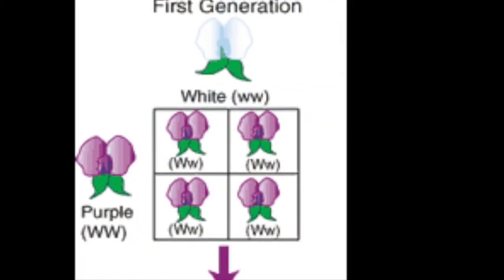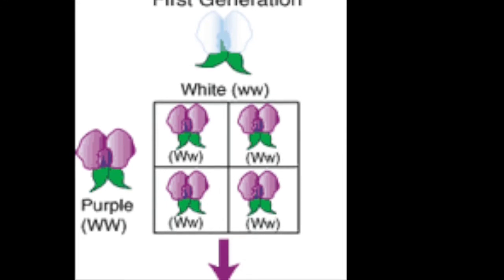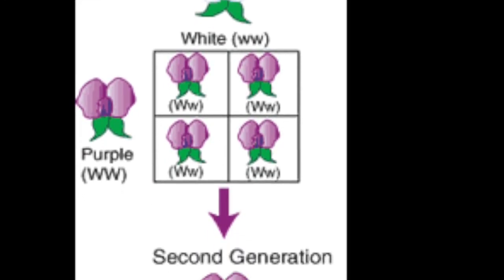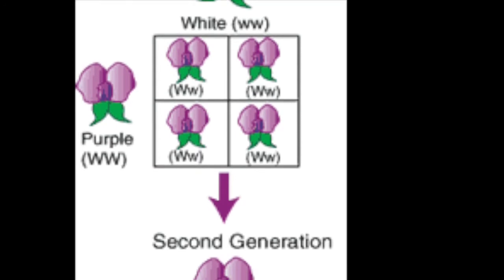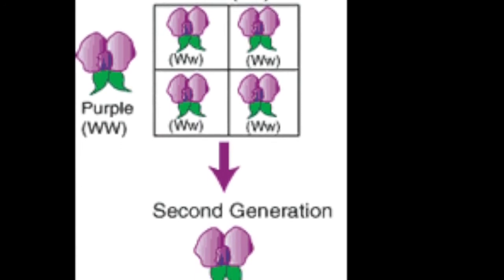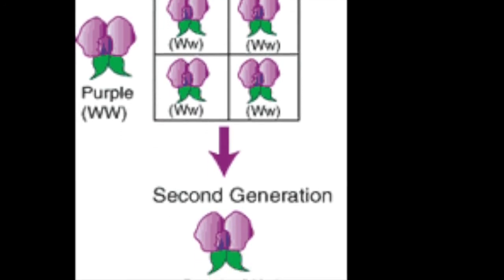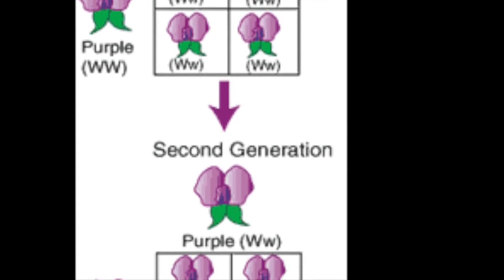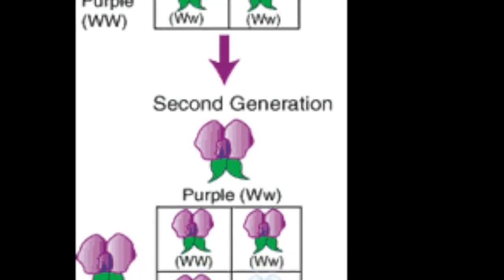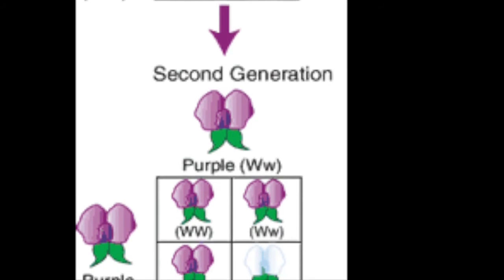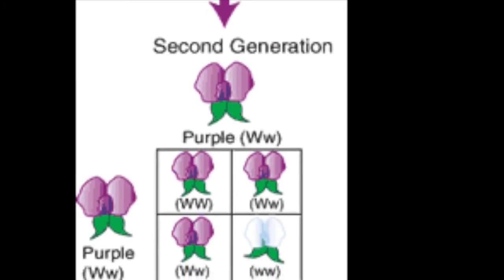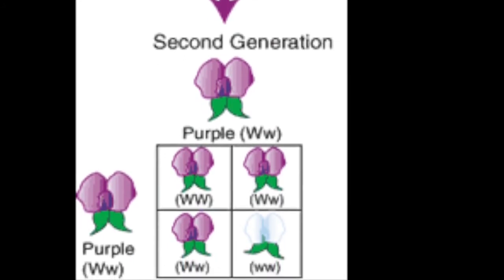Let's look at dominance. Do you remember what happened when Mendel crossed purple flowered plants and white flowered plants? All of the offspring had purple flowers. There was no blending of traits in any of Mendel's experiments. Mendel had to come up with a theory of inheritance to explain his results. He developed a theory called the Law of Segregation.